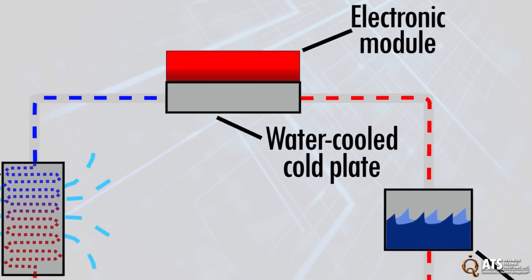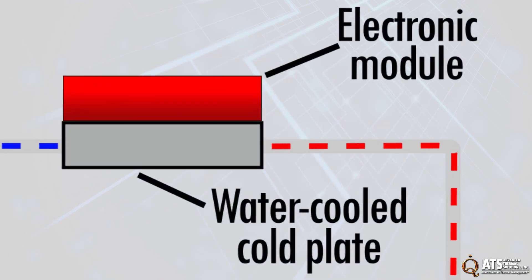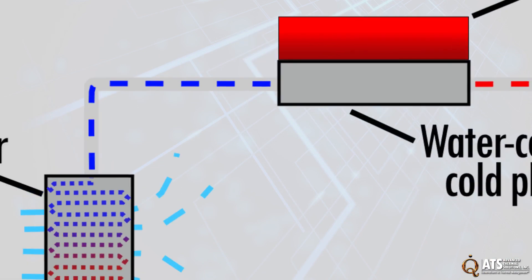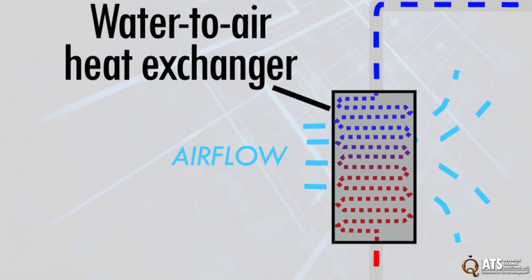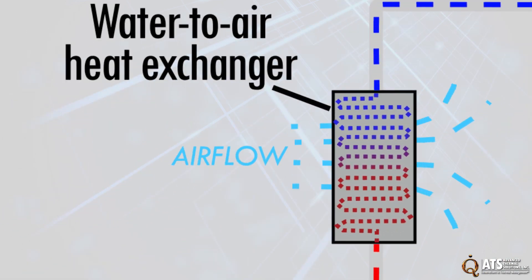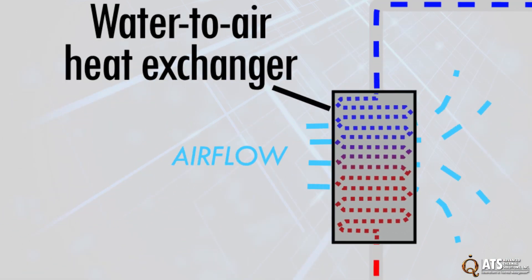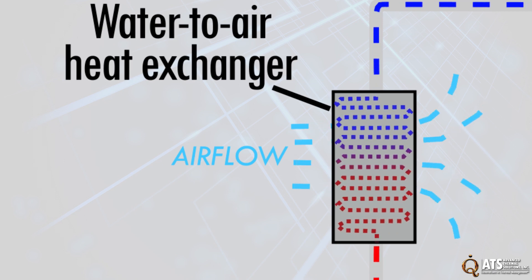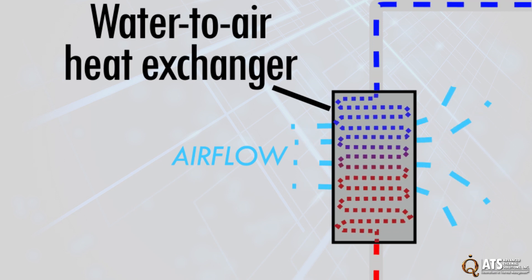In a liquid cooling loop, coolant is pumped through the cold plate on top of the hot component. The heat dissipated from the component is transferred in the heat exchanger to the ambient, resulting in lowering the temperature of the coolant as it travels back into the cold plate.